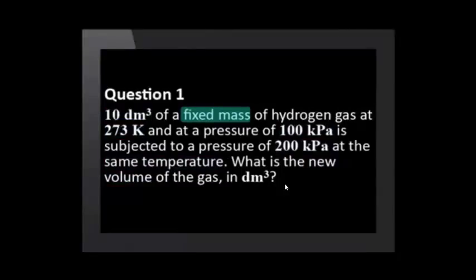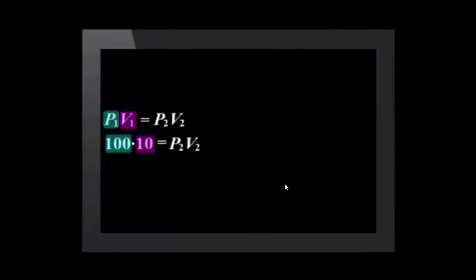10 decimeters cubed of a fixed mass of hydrogen gas at 273 Kelvin and at a pressure of 100 kilopascals is subjected to a pressure of 200 kilopascals at the same temperature. What is the new volume of the gas in decimeters cubed? We see the mass of gas is fixed, in other words, constant.